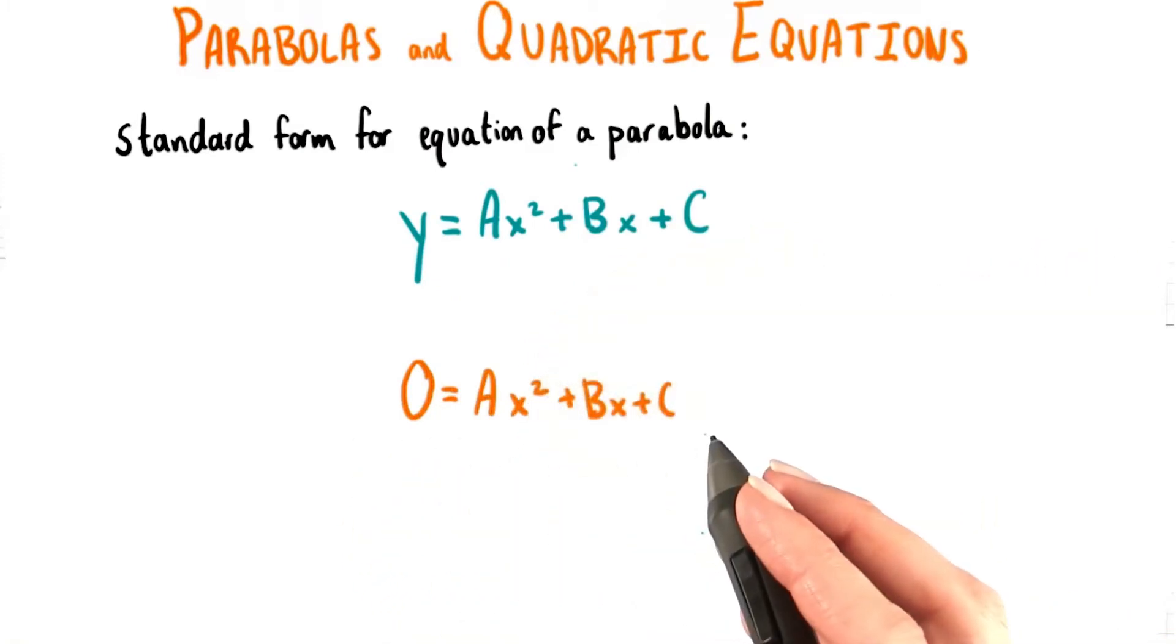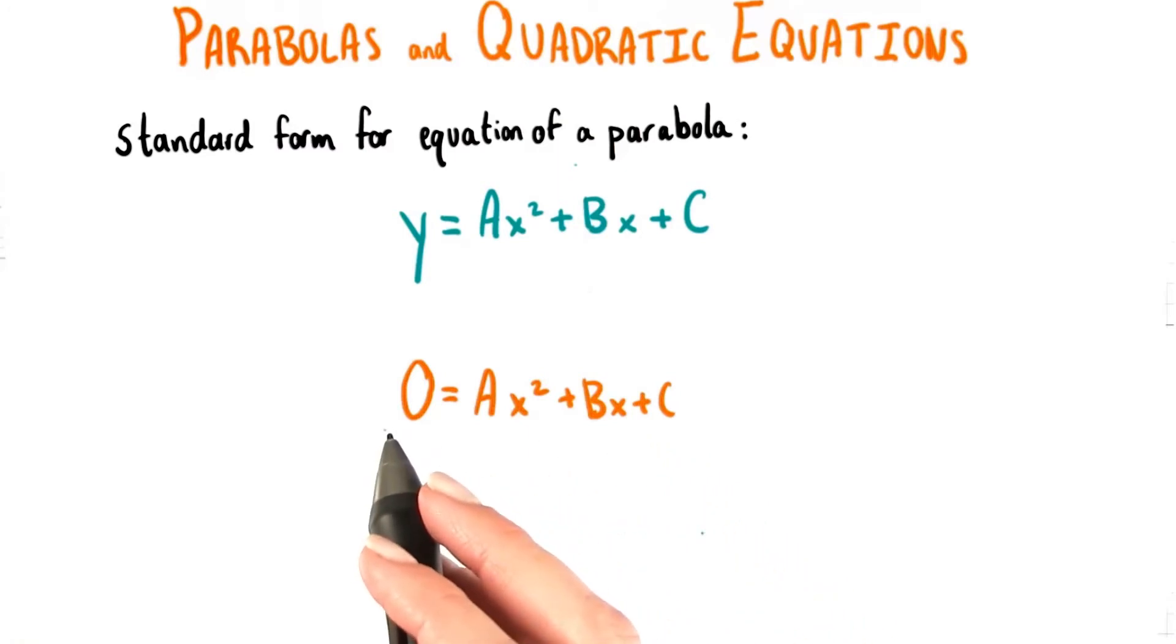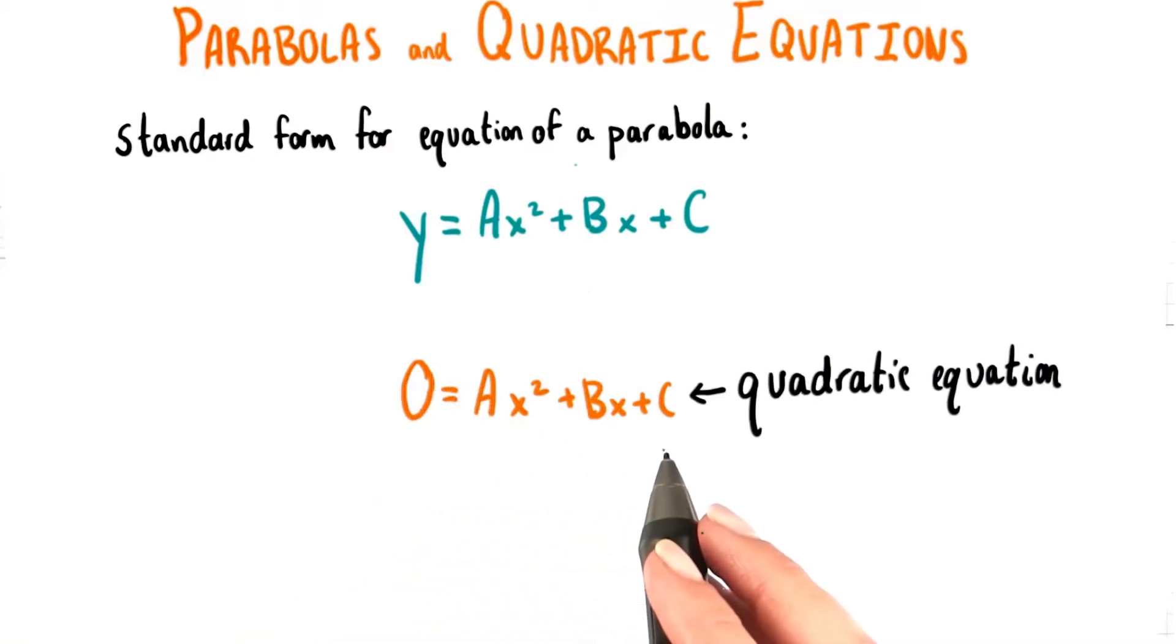Now we know that this is no longer an equation for a parabola. This is not going to give us any points to graph since we only have x as our single variable. This value of 0 isn't varying, so it's not a variable, it's just a constant. This kind of equation, or any equation that you can write in this form, is called a quadratic equation.